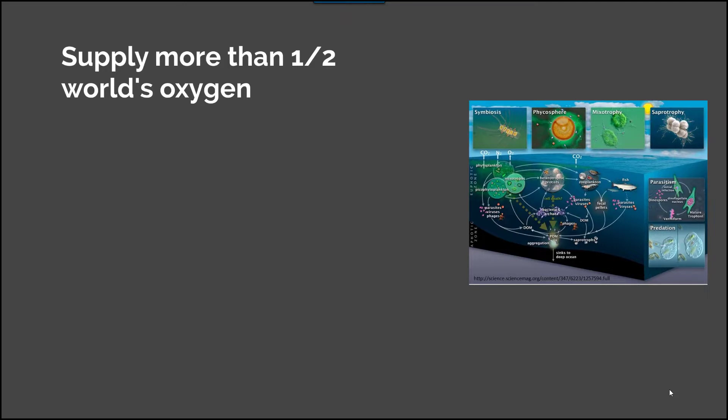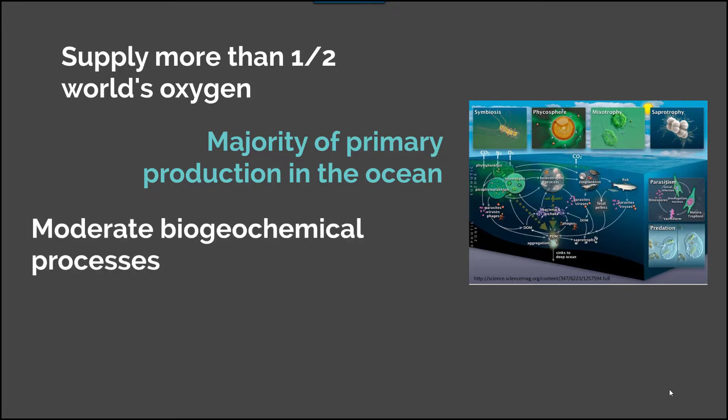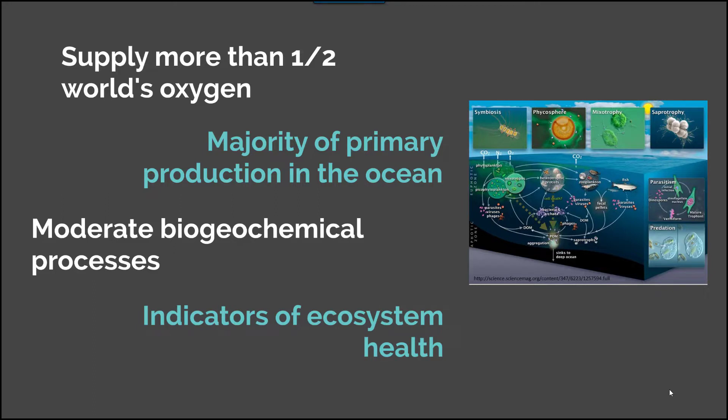Taking a closer look at marine ecological roles: these organisms supply more than half of the world's oxygen and make up the majority of primary production in the ocean, despite the fact that we tend to think of larger macroorganisms such as kelp conducting a lot of that photosynthesis. They moderate biogeochemical processes and are indicators of ecosystem health. The presence of these organisms in excess, particularly in something such as a harmful algal bloom, can be indicative of a problem within the ecosystem.